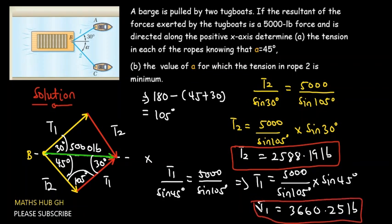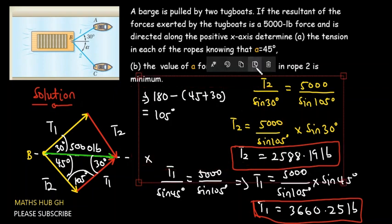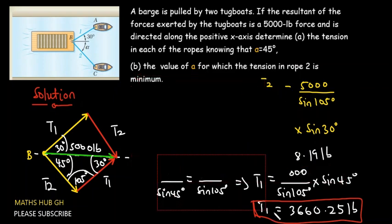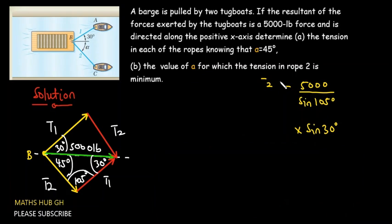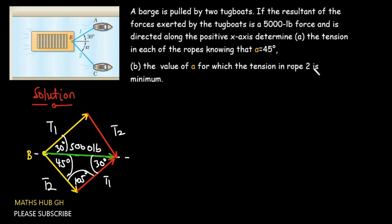Now let's move on to the second part of the question. The second part asks us to determine the value of angle alpha for which the tension in the second rope is at its minimum value. Let's look at how we are going to solve this.